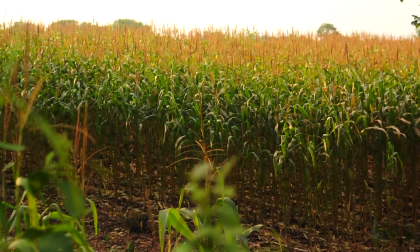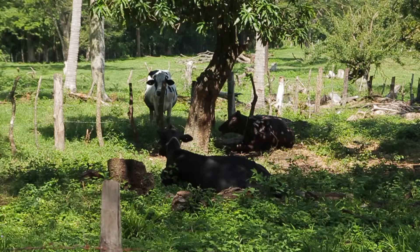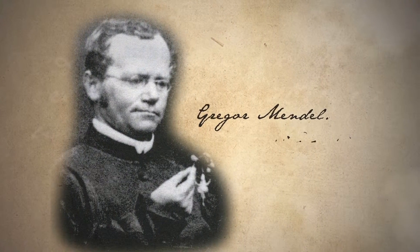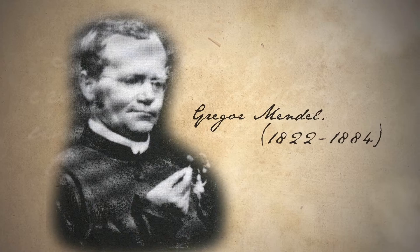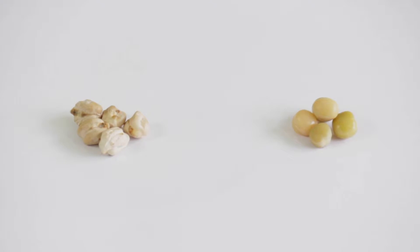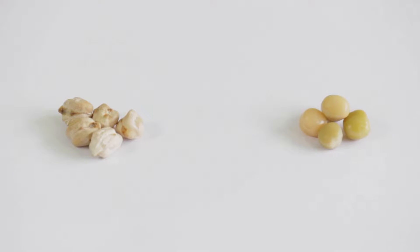produciendo especies vegetales y animales con características deseables para los agricultores. En el siglo XIX, el descubrimiento del naturalista Gregor Mendel acerca de las bases de la herencia, experimentando con plantas de guisantes, fue uno de los acontecimientos más grandes para la genética.